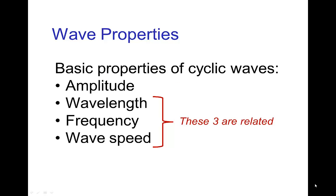Wave properties. There are several basic properties for cyclic waves. In another tutorial, it discusses amplitude of waves. And here we're going to look at the properties of wavelength, frequency, and wave speed.